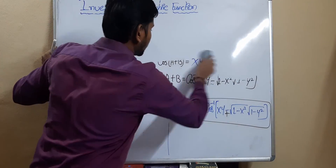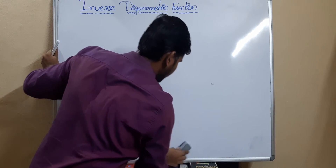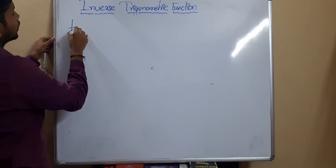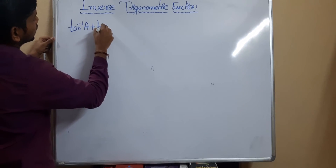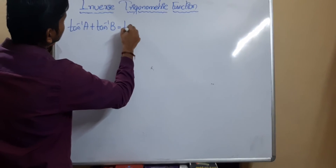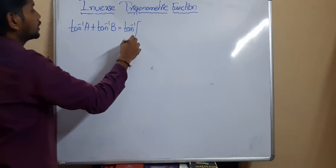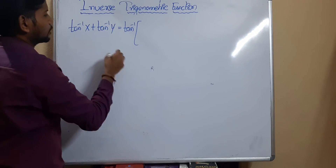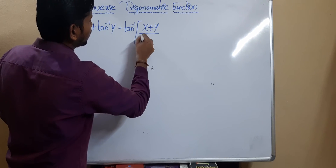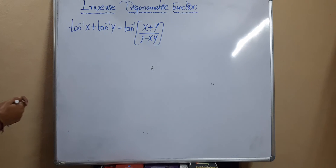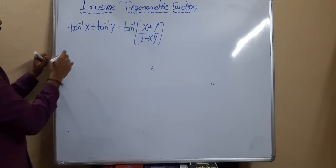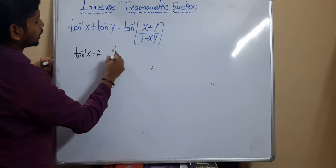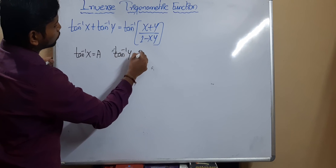For the tan part, I would like to derive one more formula. Concentrate here: tan⁻¹(x) + tan⁻¹(y) = tan⁻¹((x + y) / (1 − xy)). To derive it, let tan⁻¹(x) = a and tan⁻¹(y) = b.